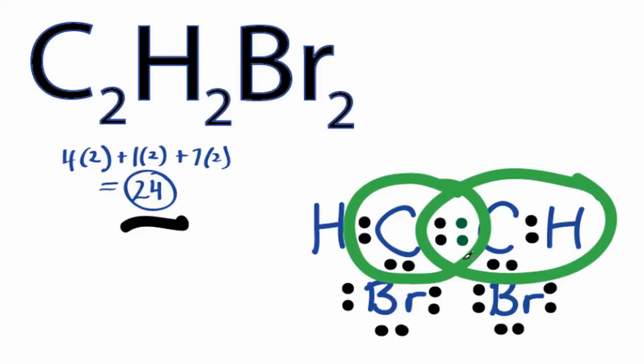So we've filled the outer shells of all the atoms in C2H2Br2 Lewis structure, and we've used 24 valence electrons.